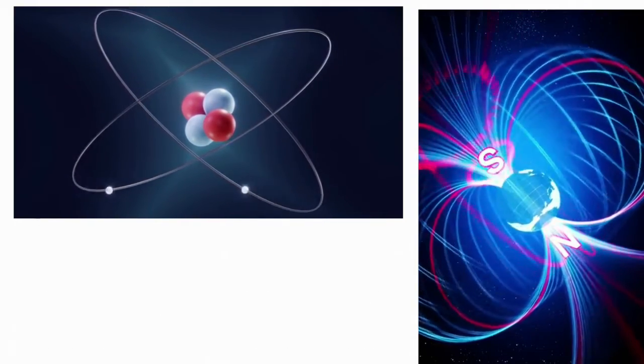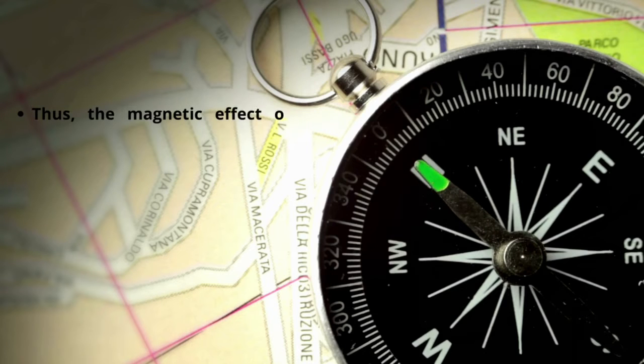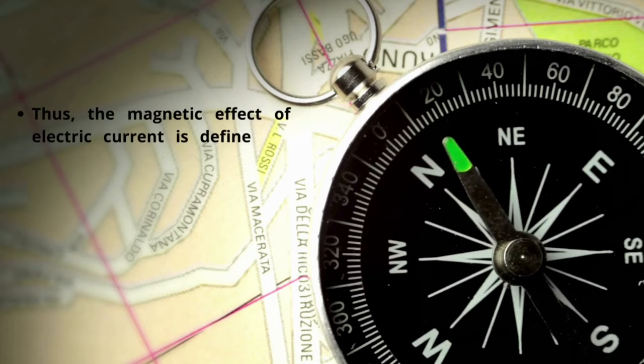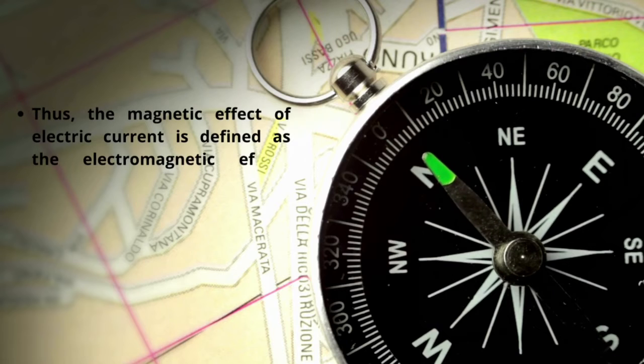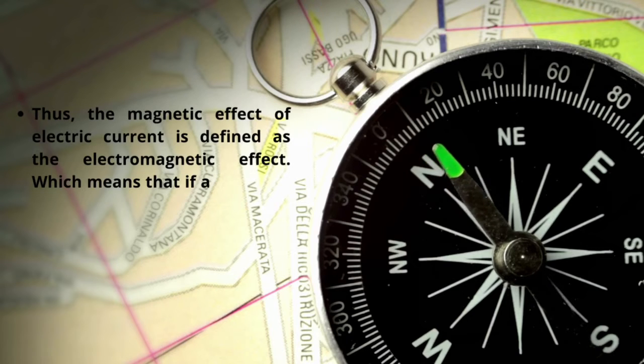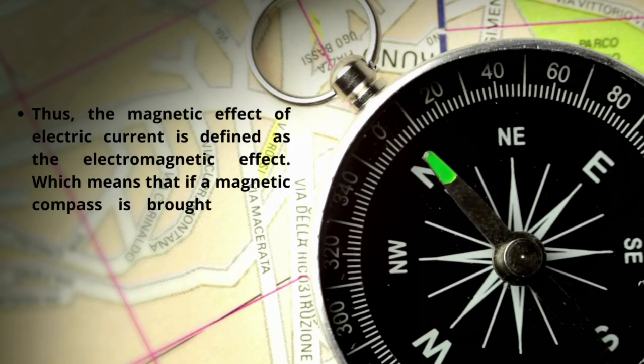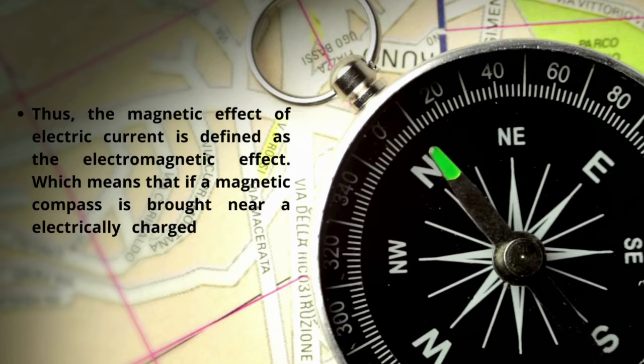Thus, the magnetic effect of electric current is defined as the electromagnetic effect, which means that if a magnetic compass is brought near an electrically charged conductor, then the needle of this compass gets deflected because of the flow of electricity.